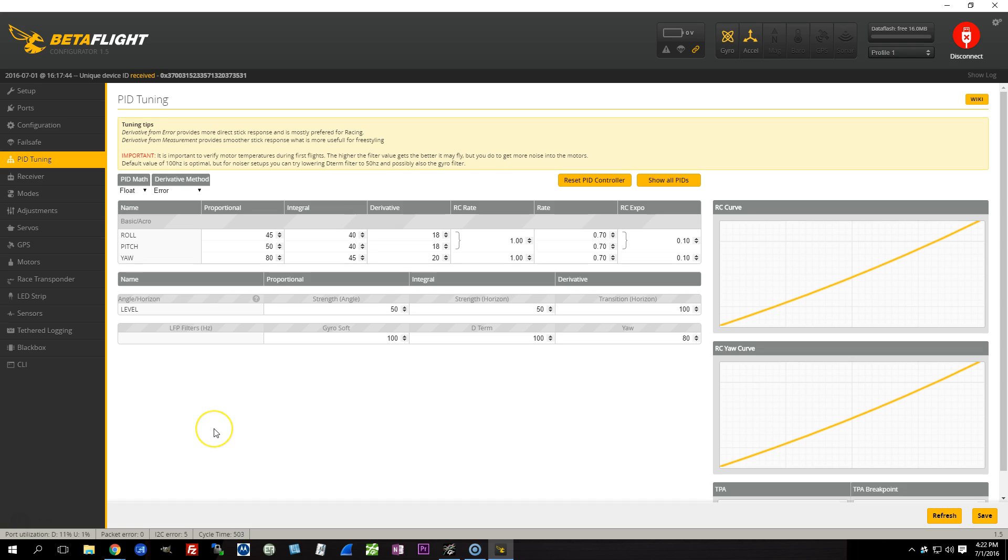There's a thing in Betaflight, later versions of Betaflight, called derivative method, and the two options are error and measurement. What is that all about? Let's talk about it.